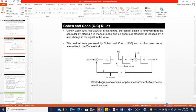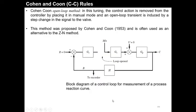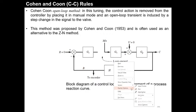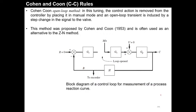In the previous class we discussed the Ziegler-Nichols cycling tuning method. Today we are going to discuss the second tuning method using the Cohen-Coon method. The Ziegler-Nichols is the most famous and most acceptable method for tuning, but the Cohen-Coon method was also developed in 1953 by Cohen and Coon as an alternative to the Ziegler method, based on the open loop criteria.